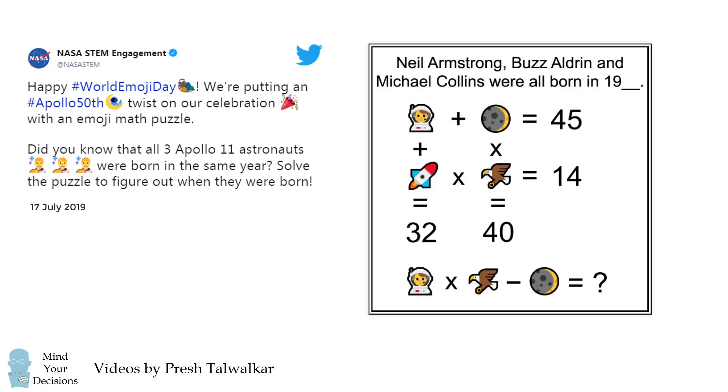On July 17th, 2019, NASA STEM engagement tweeted out this emoji math puzzle to celebrate the 50th anniversary of landing on the moon. If you solve this problem, you will also get the year in the 1900s in which all three Apollo 11 astronauts were born.